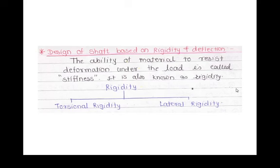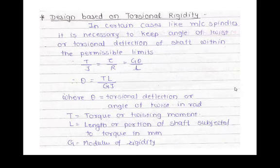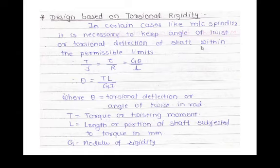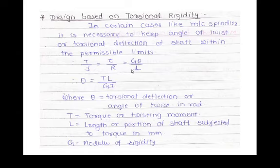For the design of shaft based on torsional rigidity: in certain cases, like a machine spindle, it is necessary to keep the angle of twist or torsional deflection of the shaft within a permissible limit. From the equation T/J = Gθ/L, we use the two parameters T/J = Gθ/L, where T is the torque, J is the polar moment of inertia, G is the modulus of rigidity, θ is the angle of twist, and L is the length of the portion of the shaft subjected to torque, in mm.